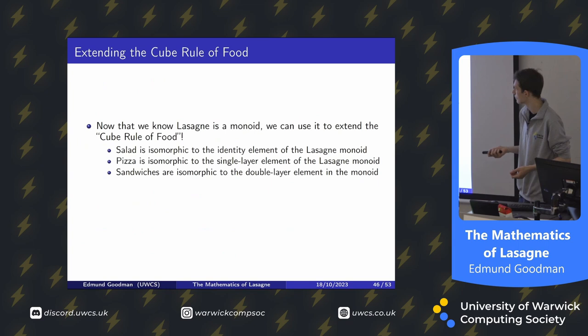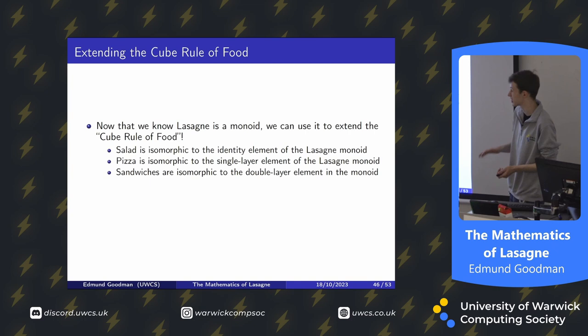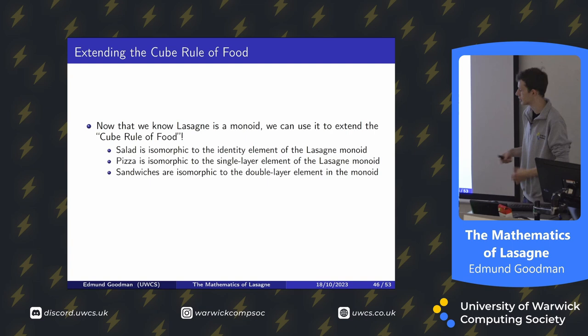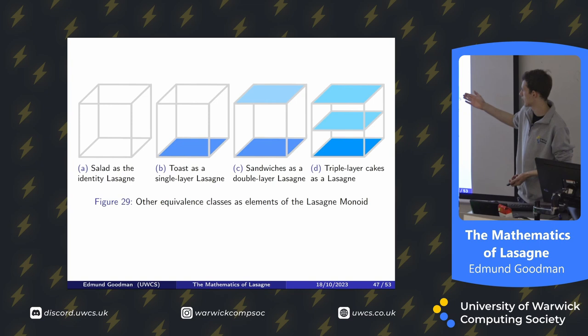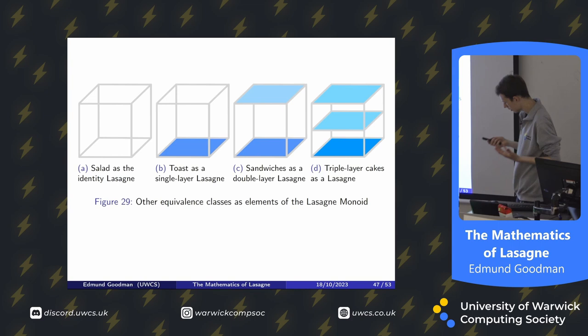This extends the cube rule of food. We know lasagna is a monoid, and we can say salad is isomorphic to the identity element — the empty plate — because there's no starch there. Pizza is isomorphic to the single layer of a lasagna monoid, perhaps called a lasagne. Sandwiches are isomorphic to the double layer element in the monoid. These are all pretty sad lasagnas. In fact, lasagna is a rigorous definition of cake — a number of layers of starch going upwards is actually a monoid, this is lasagna. So salad, toast, sandwiches, and triple-layer cakes are all types of lasagna, as parts of this monoid and in this set.